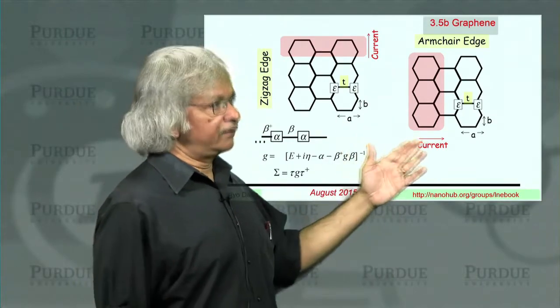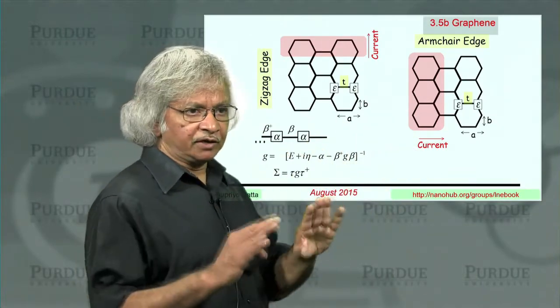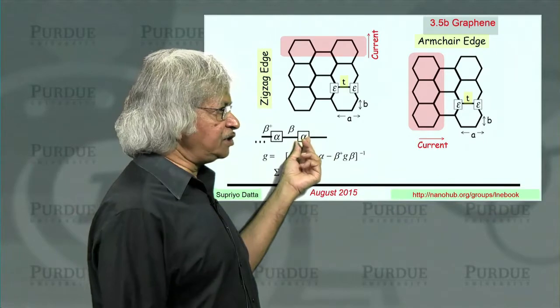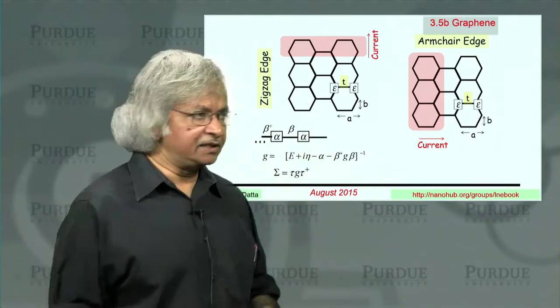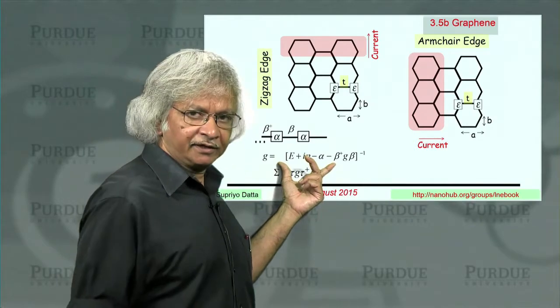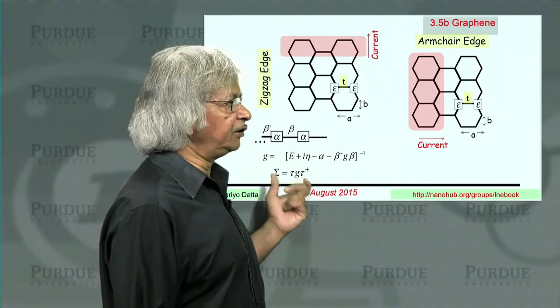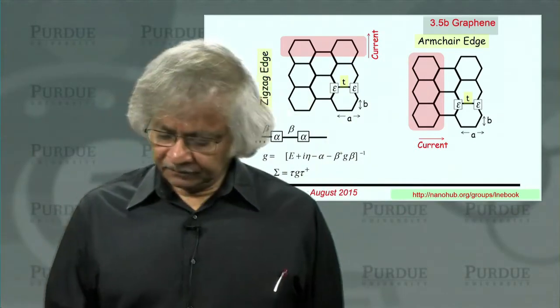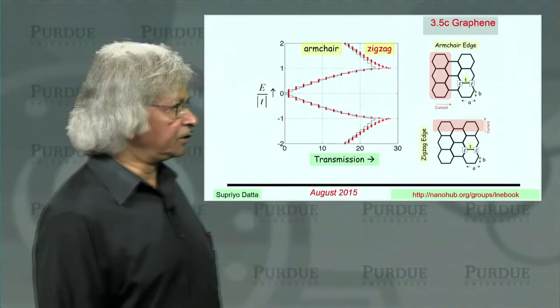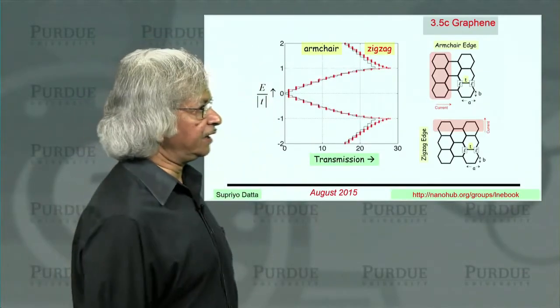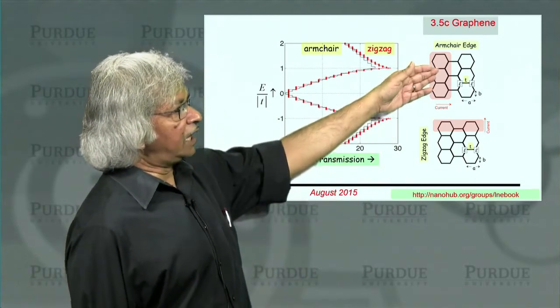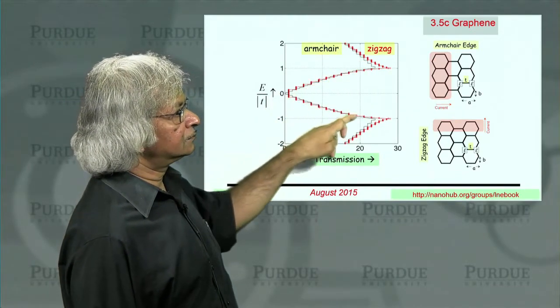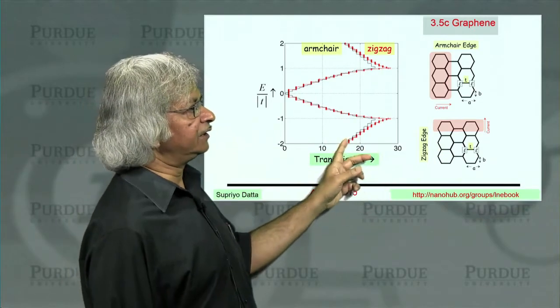And in each case, you could write down these alphas and betas. What you'd have to do is set it up, figure out in a 1D chain what each unit should be, figure out the alphas and betas. Then you'd have to solve this iteratively to find the surface Green's function. And then you could find the self-energy. So that would be the overall procedure. Now I'll just show you some result that you could get. And as I said, the MATLAB codes are in the notes.